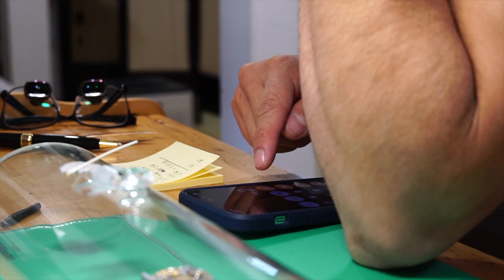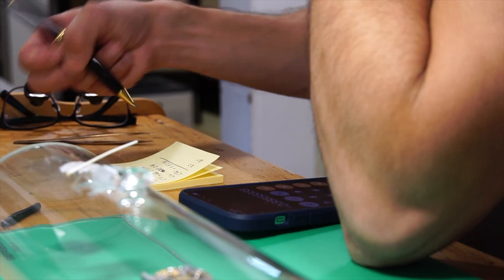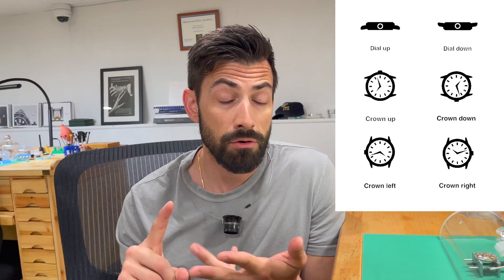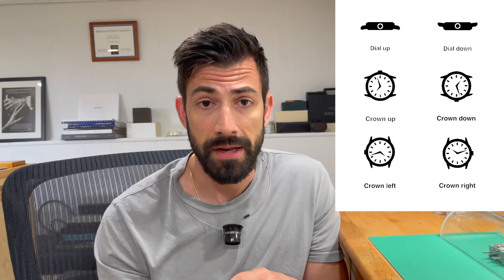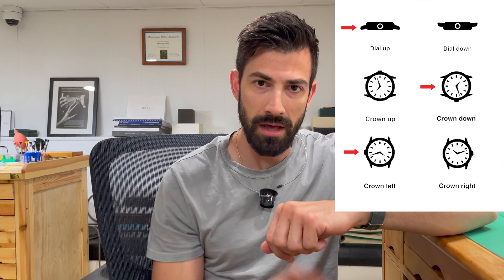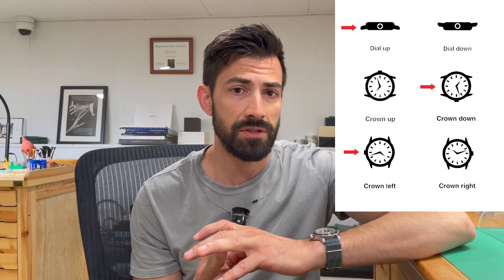When you time a watch out, you look at how it's running in different positional changes. Dial up, dial down, crown up, crown down, crown left and crown right. So you're often in crown left, crown down and dial up. Those are the three most important positions to average.